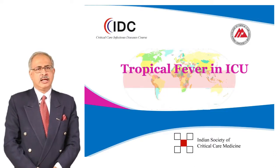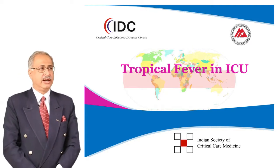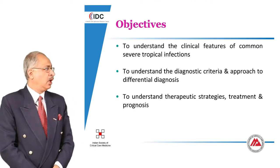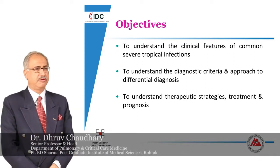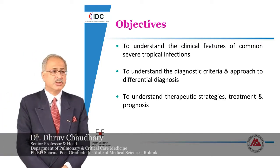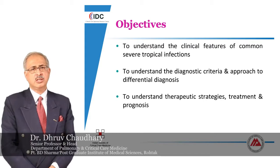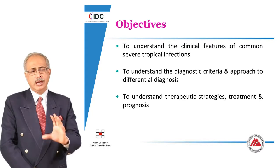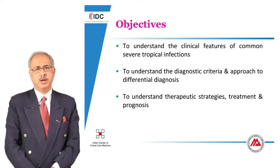Today, in our 45 minutes, we are going to discuss tropical infections in the intensive care. The objectives of this talk are to understand the clinical features of common severe tropical infections which come to the intensive care units, to understand the diagnostic criteria and approach to differential diagnosis, and finally to understand therapeutic strategies, treatment, and prognosis — because these three things are extremely important in any condition. Once we clearly understand these three objectives, we expect to manage our patients better.